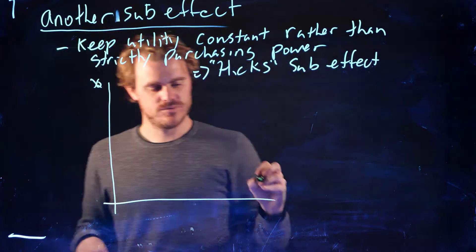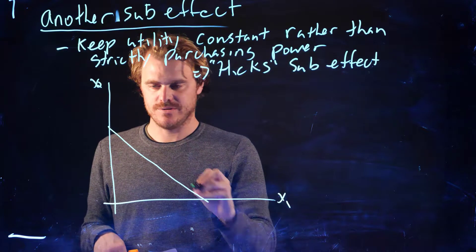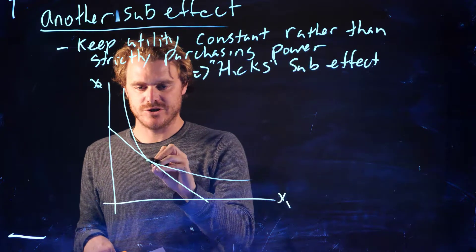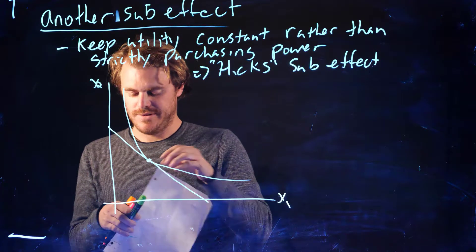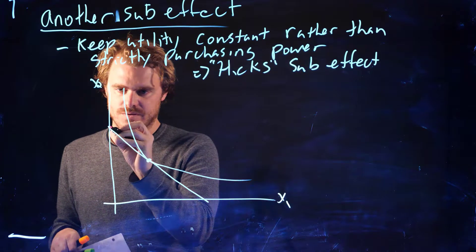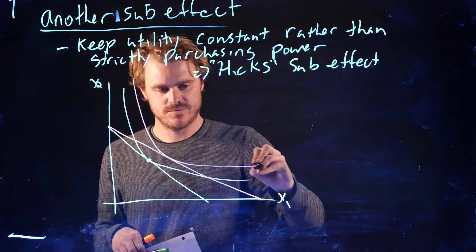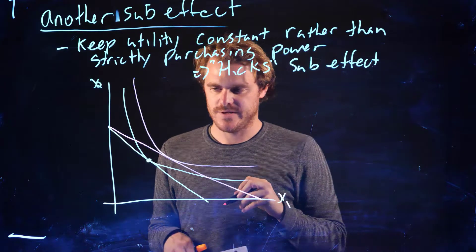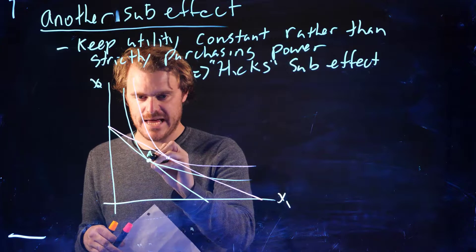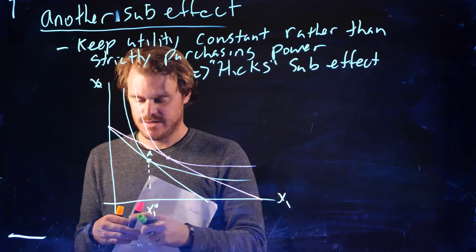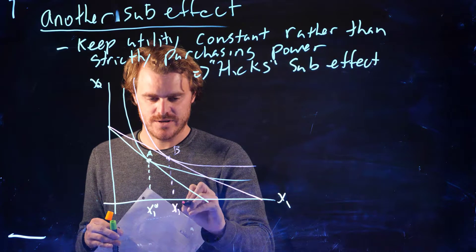So here's amount of good two, amount of good one. Here's our original budget constraint and our original choice. And then let's say we have this new budget constraint with a reduced price of good one and the new choice. So this is point A we've been saying, x1 star. This is point B, x1 star star.